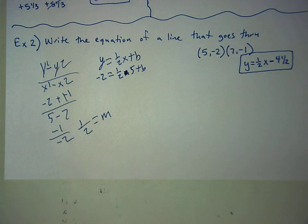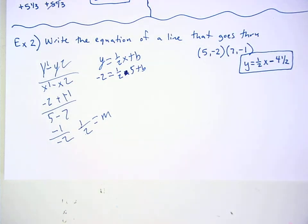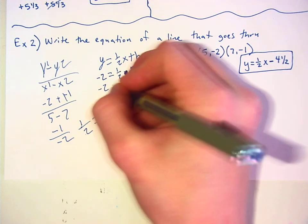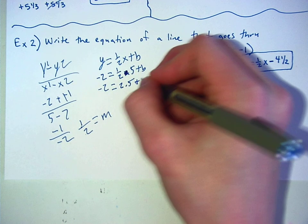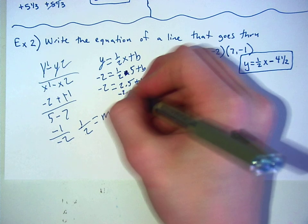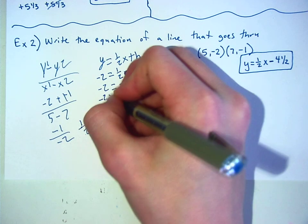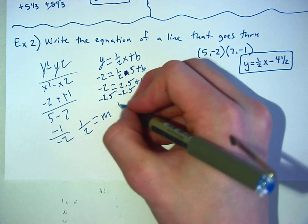And then you would multiply the half and the five to get 2.5. And then you would subtract 2.5 from both sides, which will give you b equals negative 4.5. Nice job.